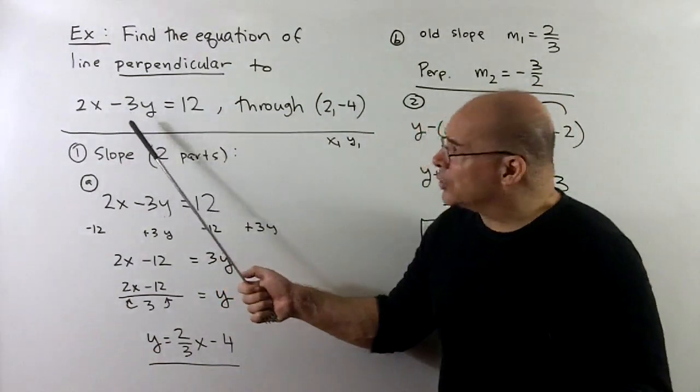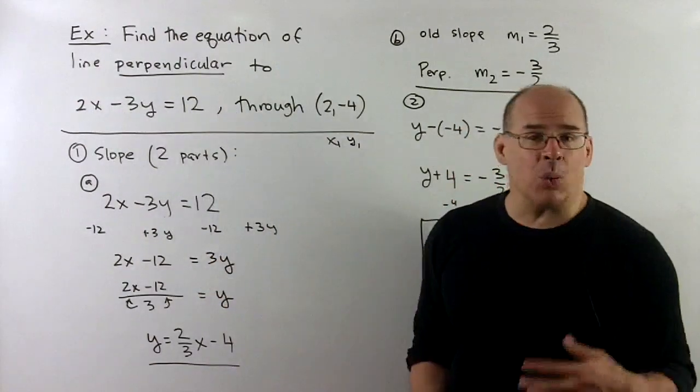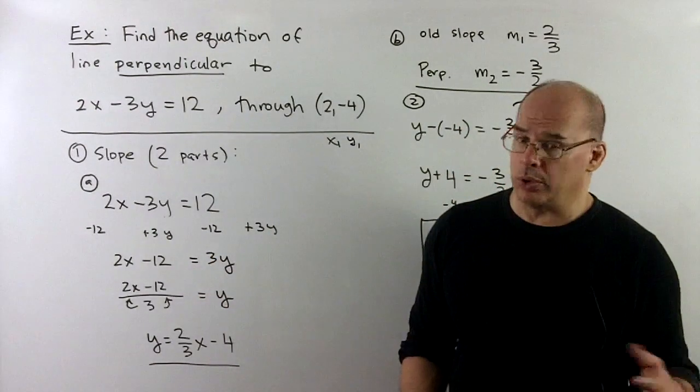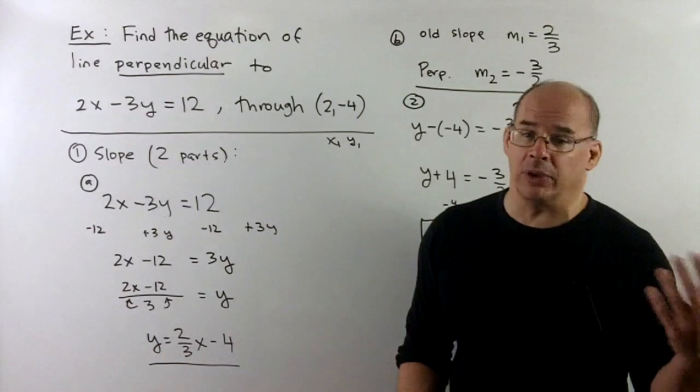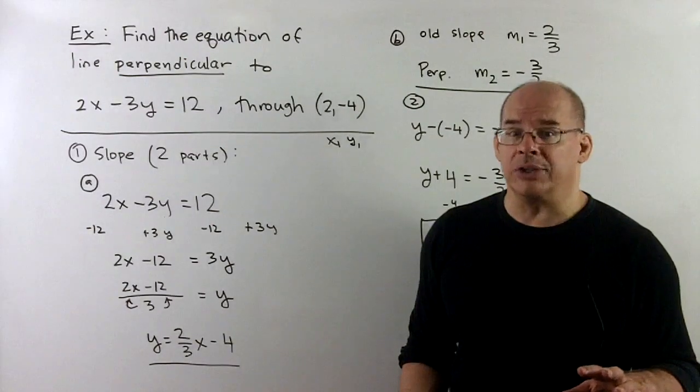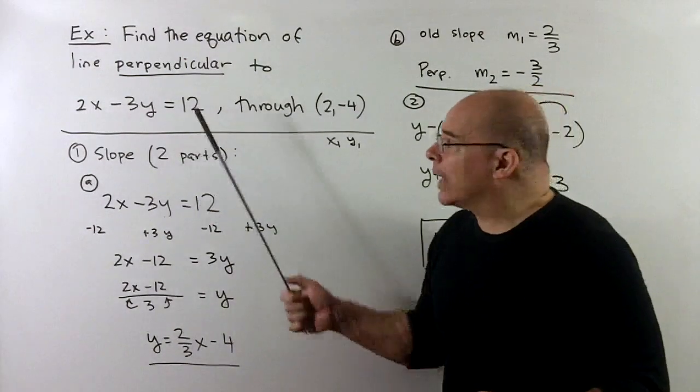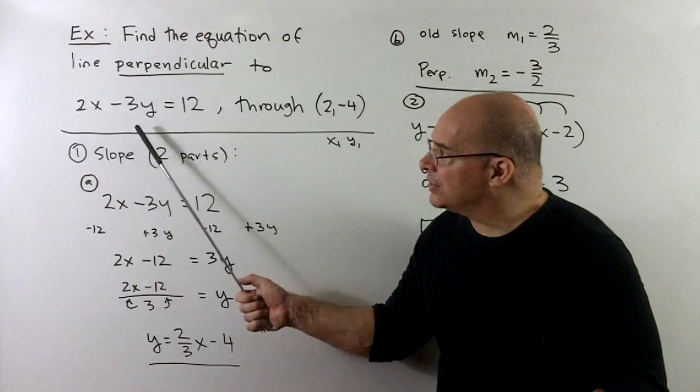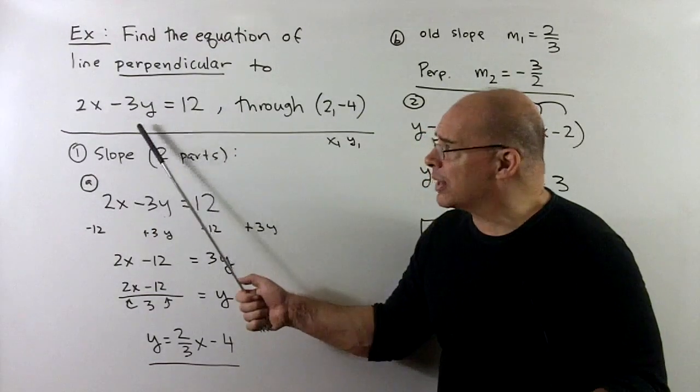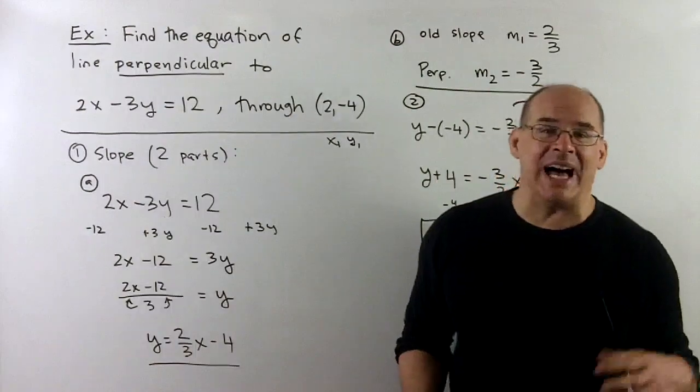Now, problem is, we're not given the old line as y equals mx plus b. If it was, we could just read off the old slope, and we get to our answer quicker. So, here, what I need to do first is get this into slope-intercept form, y equals mx plus b, which means we need to isolate the y.